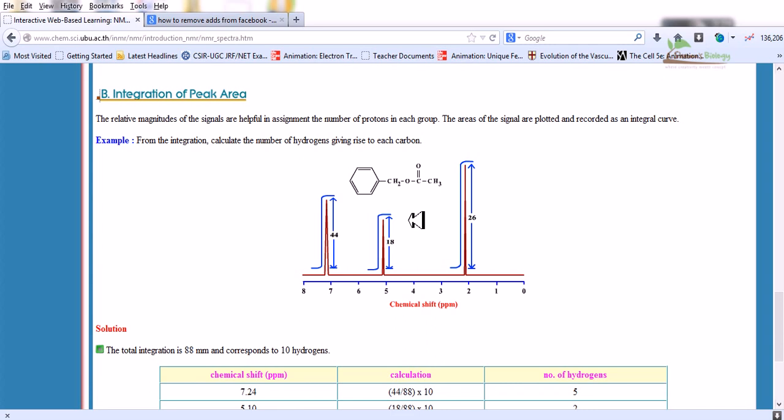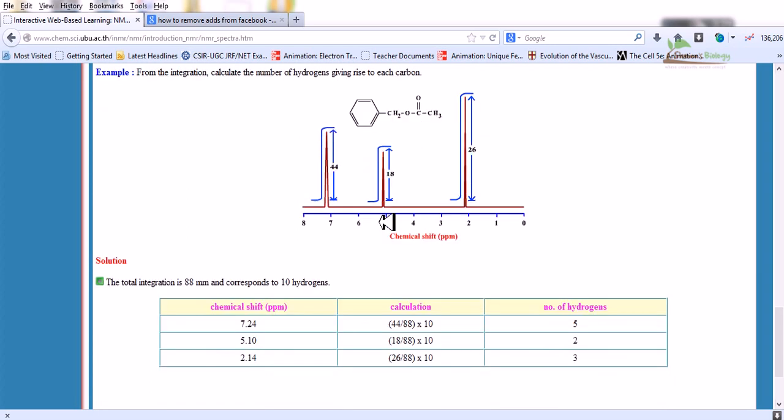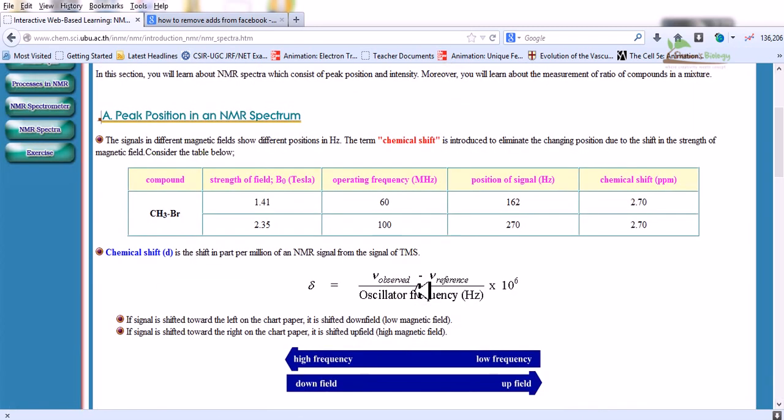Integration of peak area. The relative magnitudes of the signals are helpful in the assignment of the number of protons in each group. The areas of the signal are plotted and recorded as an integral curve. For example, from the integration, calculate the number of hydrogen and carbon. From the integration we can find the total integration is 88 millimeter and corresponds to 10 hydrogen. So the chemical shift at 7.25 has 5 hydrogens. Chemical shift at 5.10 has 2 hydrogens. And chemical shift at 2.14 has 3 hydrogens. The calculation is given here at this position.